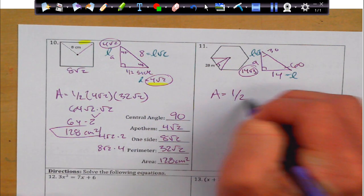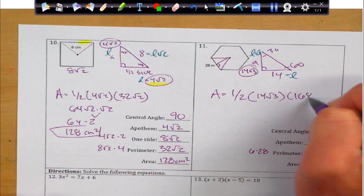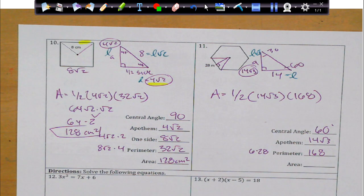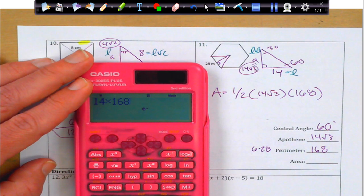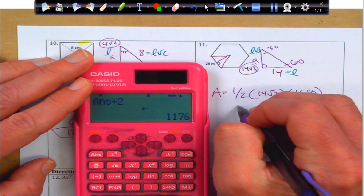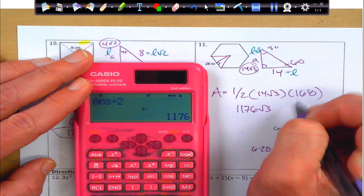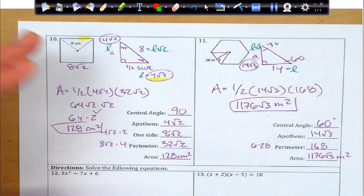Area equals 1 half apothem, 14 rad 3, times my perimeter of 168. And, again, I'm going to just deal with my whole numbers and slap the rad 3 on at the end. So, I'm going to do 14 times 168. Pa-chow. Divide by 2. Pa-ching. And we just slap that rad 3 on there. Slap the units on and call it a day. There we go.